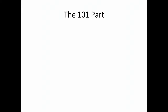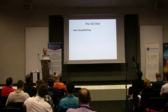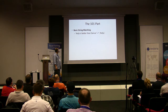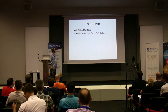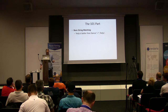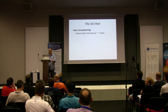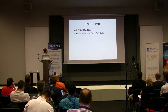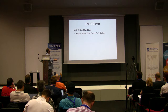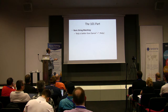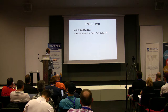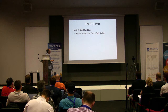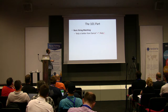This is the 101 part — basic string matching. We have this string 'kelp is better than dancer,' just a regular string with words in it. You can see we have this string and these lines here — these lines are called delimiters. That's the typical delimiter you use for a regular expression. This basically says: look in this string for this literal.